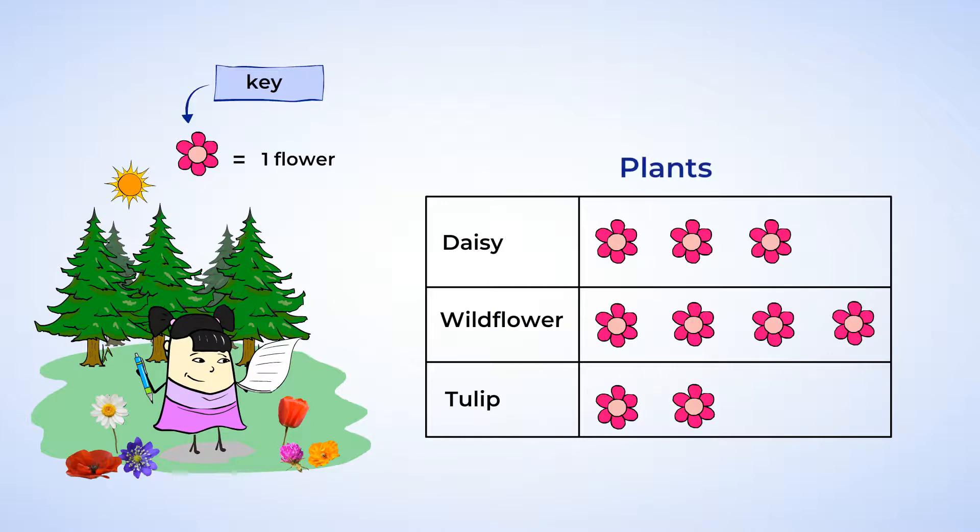Now, Sue has a title, so that's good. Well done, Sue. Right now, the picture graph is titled Plants. That's not wrong, but Sue's title could be even more specific. All of the plants Sue saw were flowers, so let's call it Flowers We Saw Today. Great work. You really helped Sue out, and now her picture graph looks spectacular.